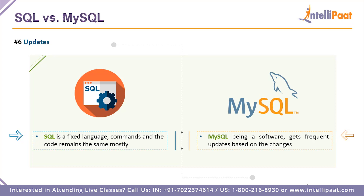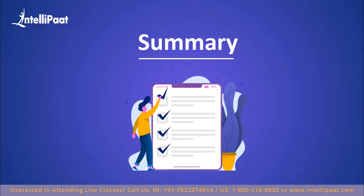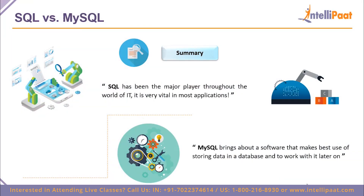Point number six is updates. SQL is a fixed language — there are multiple flavors of SQL, such as Oracle SQL and Microsoft SQL, but once you learn SQL, around 99% of the syntax and commands remain the same across them. MySQL, however, receives more frequent updates because it is a software that must cater to various customer bases. Updates help solve bugs, improve efficiency, and help you work with your database management system more effectively.